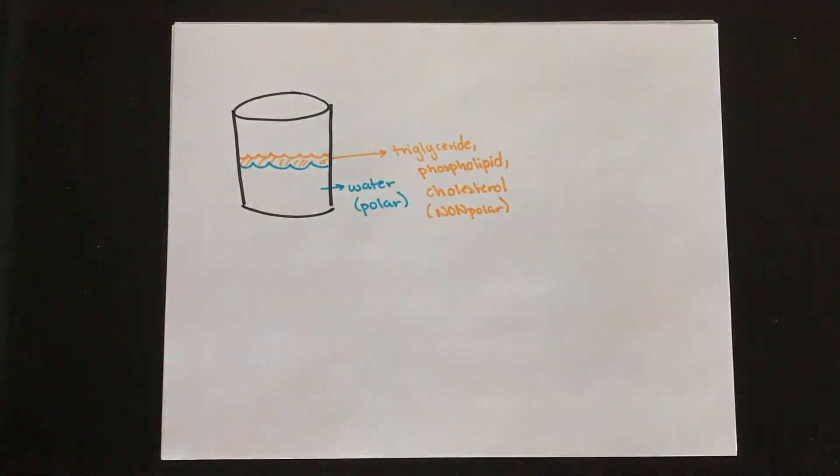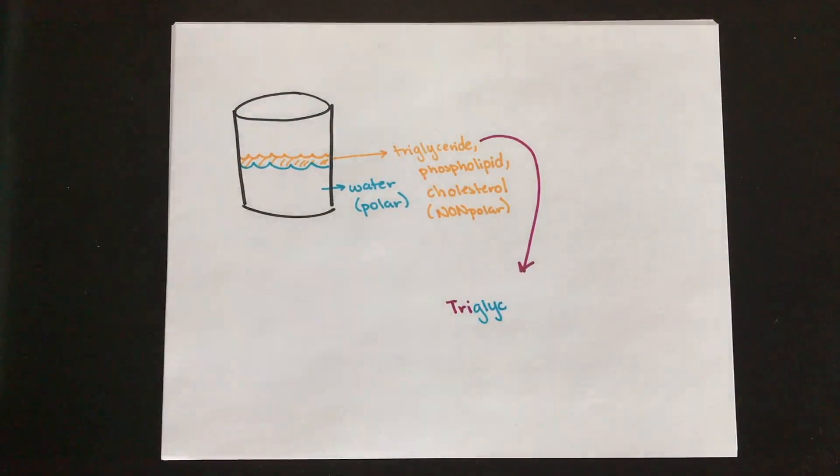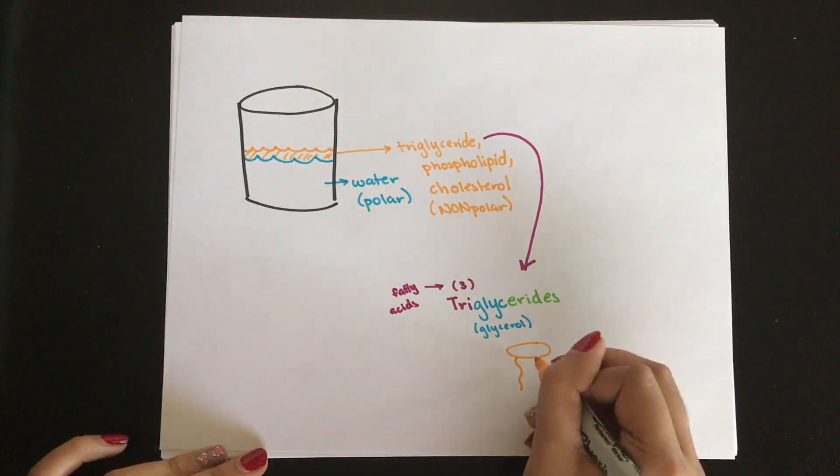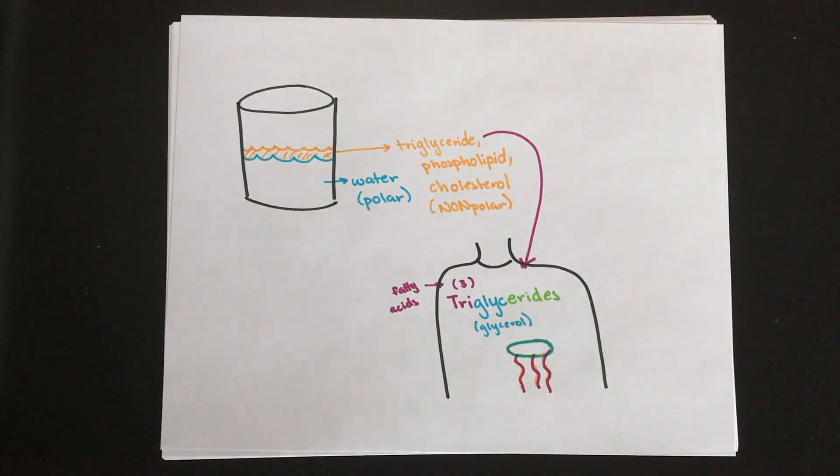First, triglycerides is what we're going to talk about. They consist of three fatty acids bonded to a glycerol head, which is an alcohol with three carbons. This is how your body typically stores its fats.